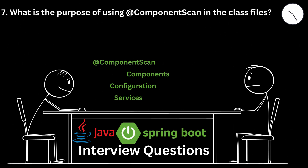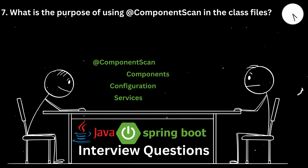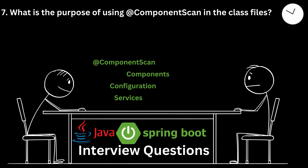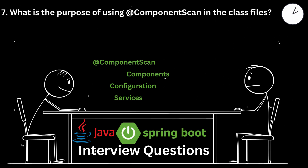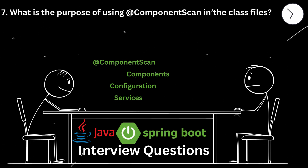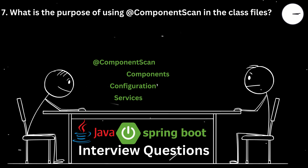What is the purpose of using @ComponentScan in the class files? The @ComponentScan annotation is used to specify the packages that Spring should scan for components, configurations, and services, allowing Spring to automatically detect and register beans in the application context. For example, @ComponentScan(basePackages = "com.example.project") in a hotel booking system told Spring to scan that package, ensuring all service and repository beans were discovered and registered automatically.